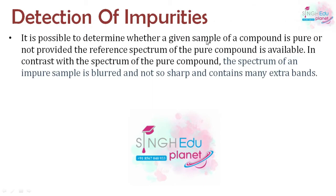We can determine whether a given compound sample is pure or not using IR spectroscopy. In a pure compound the spectrum is very sharp, but in an impure compound the spectrum is blurred and contains many extra bands. For example, if acetone has an alcohol impurity, it leads to extra bands appearing in the spectrum.